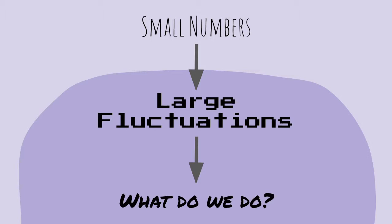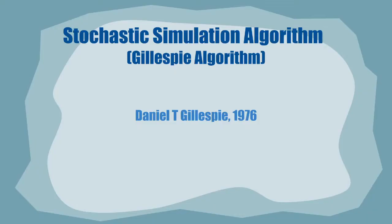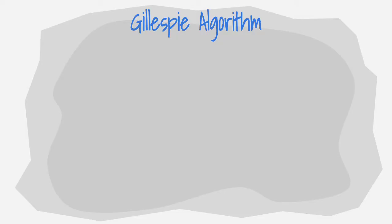Well, how can we approach this problem? The answer lies in the stochastic simulation algorithm. The stochastic simulation algorithm was introduced by Daniel T. Gillespie in 1976 and is known as the Gillespie algorithm. The Gillespie algorithm generates a statistically exact solution by running many simulations on the same system. There are four main steps to the Gillespie algorithm.